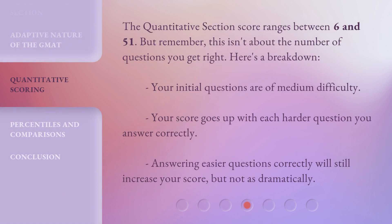The quantitative section score ranges between 6 and 51. But remember, this isn't about the number of questions you get right. Your initial questions are of medium difficulty. Your score goes up with each harder question you answer correctly. Answering easier questions correctly will still increase your score, but not as dramatically.